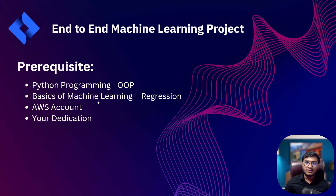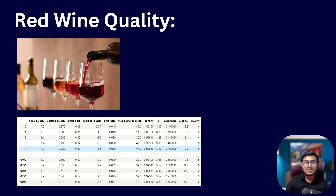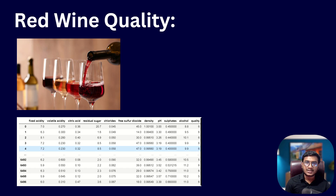The last prerequisite is your dedication. Whatever I implement, try to implement along with me so each concept becomes clear. If you have any doubts, feel free to ask in the comments. The problem statement we'll be solving is Wine Quality Prediction — I think you're already familiar with this dataset. It's available on Kaggle; just search 'wine quality dataset Kaggle' and you'll find it, with many competitions also using it.